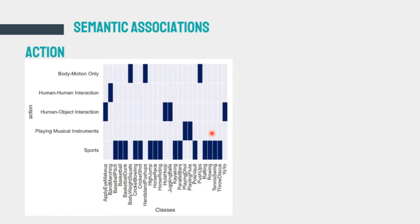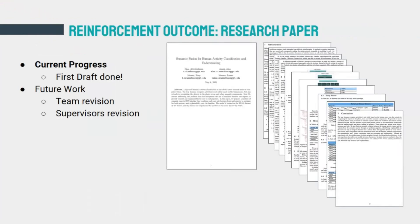For all the important outcomes, we provide a research paper. The current progress is that we have a first complete draft. What remains is a general revision by the rest of the team, followed by revision by the supervisors.